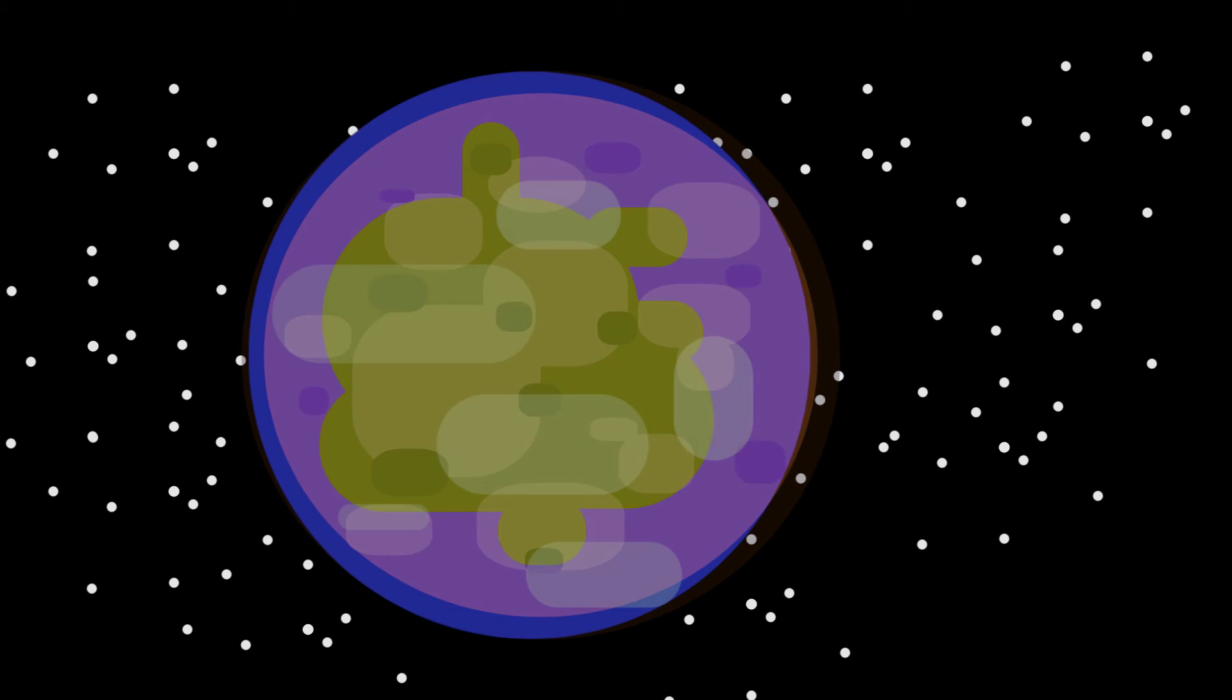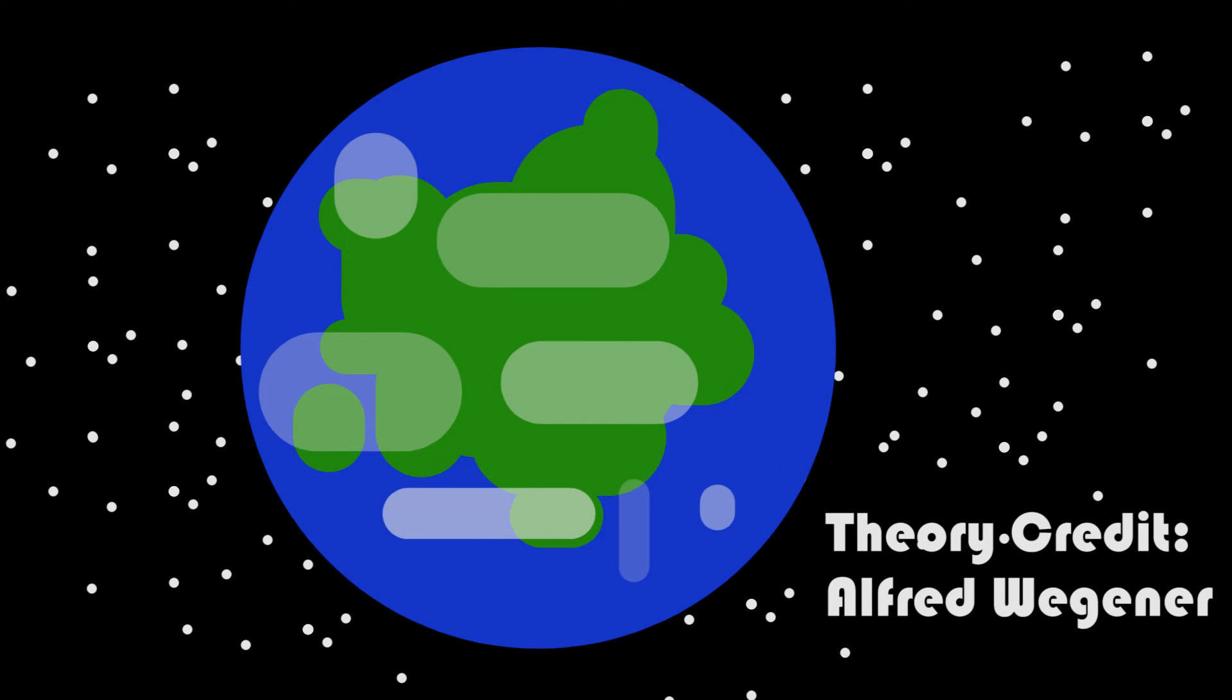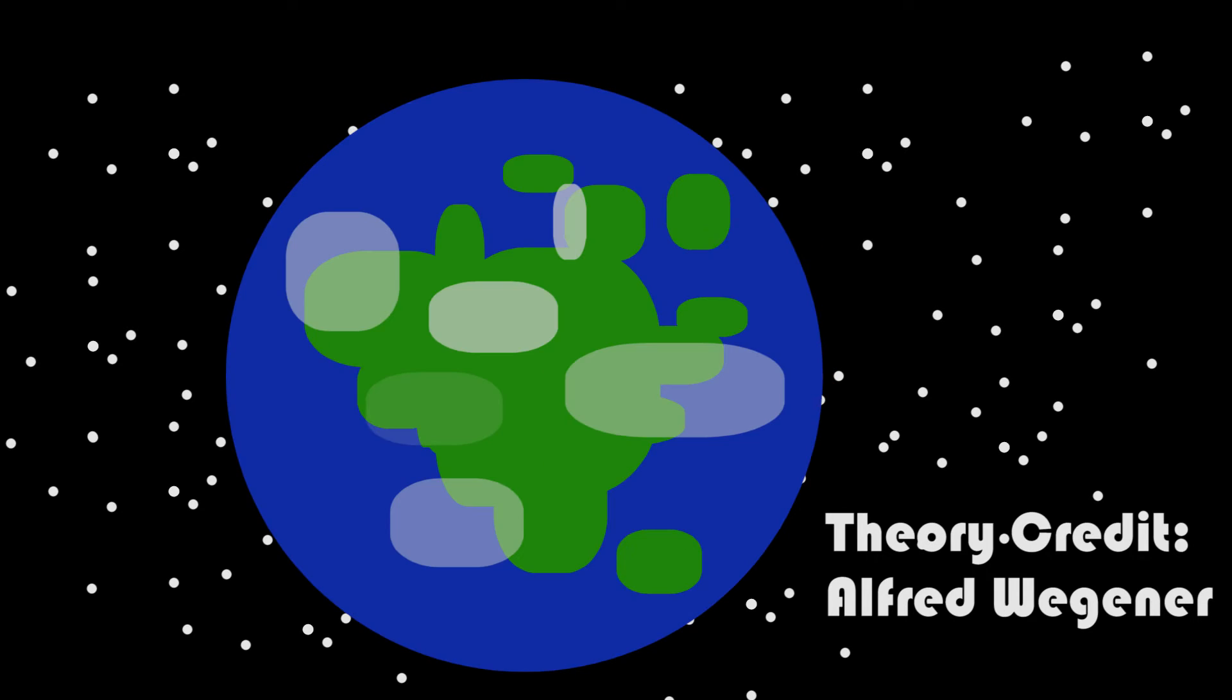As the Earth began to cool, continents and oceans began to rise. These continents were made from rocks similar to granite, and this movement of them was called continental drift.